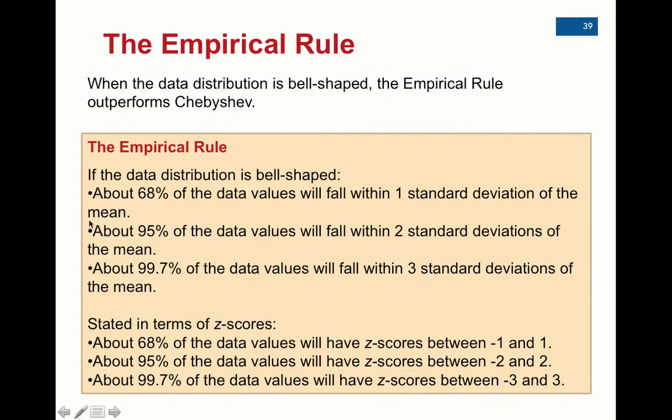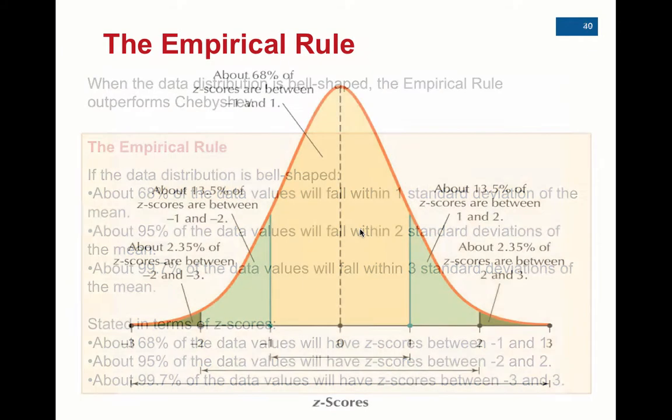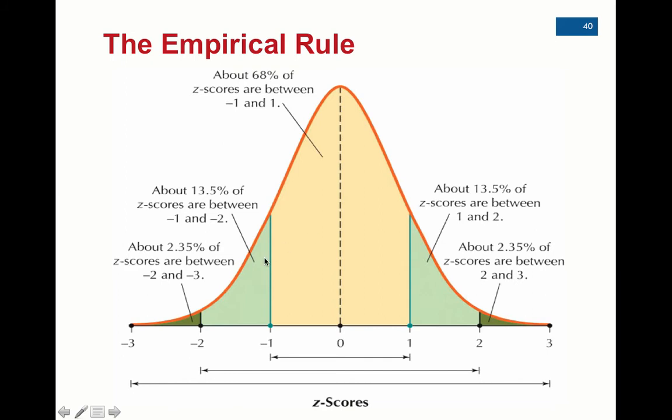Then the next rule, or next line in the rules, will tell you that 95% of the data values fall within two standard deviations of the mean. So in this picture here, it's showing you that in these light green regions, you have about 13.5% of the data.